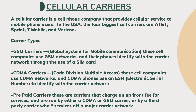A carrier uses either the Global System for Communication, GSM, radio system, or the Code Division Multiple Access, CDMA, radio system for its cellular network. These systems differ in technology but offer the same services. The different types of cell carriers are GSM carriers, CDMA carriers, and prepaid carriers.